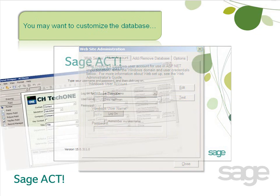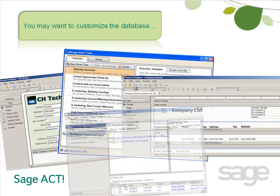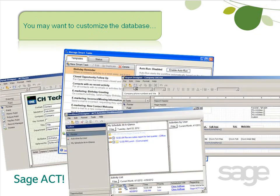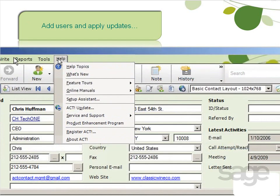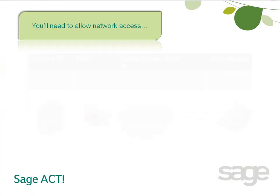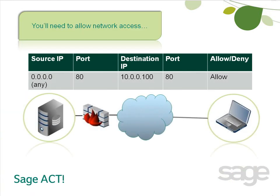Before you start telling all your users to attempt to connect, you may want to complete some database customizations on the server, add users, and even apply updates to Sajak on the server. After your server has been configured, there are a few network-related tasks that may need to be completed, including adding exceptions to your firewall so that remote clients can connect to the web service on the Sajak Premium Access via Web server.